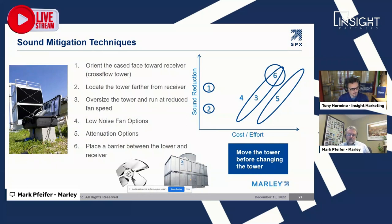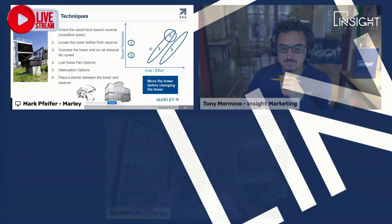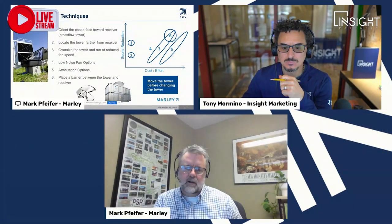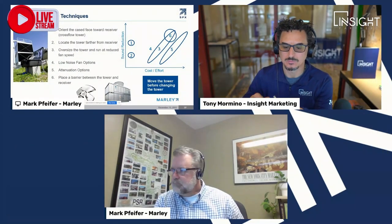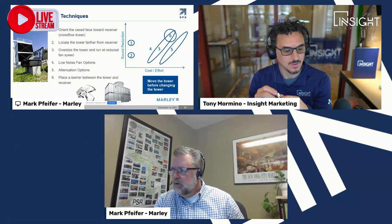Another solution is to place a barrier wall between the tower and the receiver — if you've got an existing building or wall, that may be convenient. But if you had to build a brand-new wall just for sound attenuation, that's going to be somewhat expensive, similar to the sound barrier walls you see next to highways.